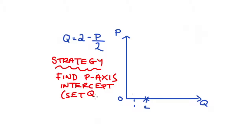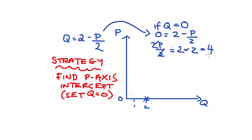So to find that point, we substitute Q = 0 into our equation and we get 0 = 2 - P/2. If we add P/2 to both sides, we get P/2 = 2. So let's multiply both sides by 2, and we get P = 4. So this curve is actually, if you recall, the same curve as we found in the first example. It has exactly the same intercepts; it will have exactly the same slope.